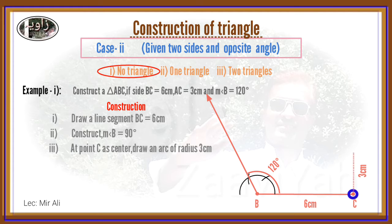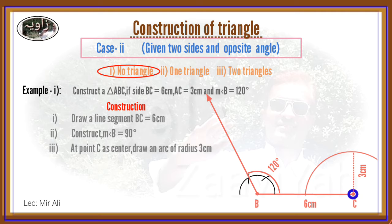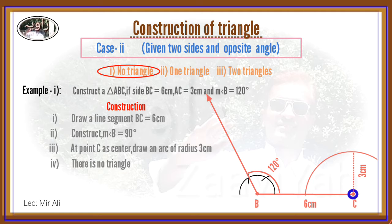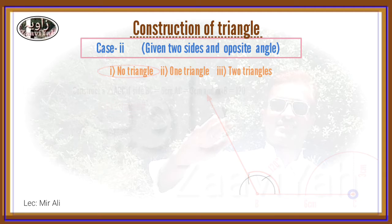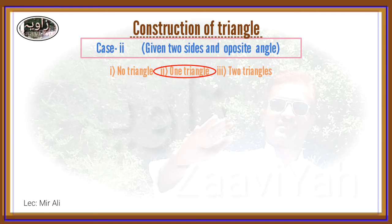The radius is 3 cm, and the arc does not intersect. Therefore, this is an example of Case No. 2 where no triangle is formed. The arc does not intersect with the line, meaning no triangle can be constructed from these given measurements.